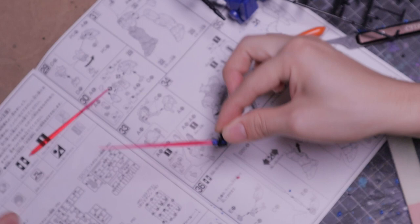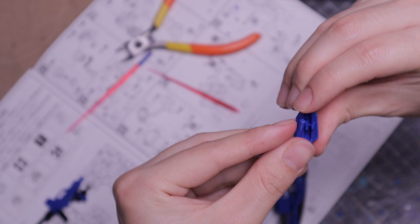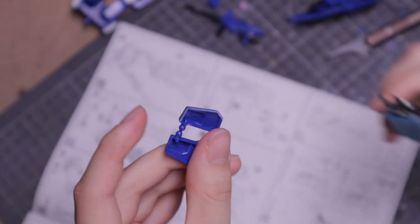This isn't part of the assembly, but there is weapon storage for the beam saber in the leg. And for more poseability options, I recommend you cut the skirt armor so they can move independently.